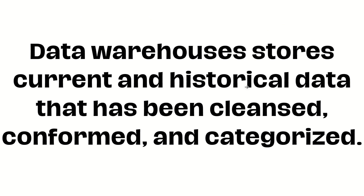A data warehouse stores both current and historical data — maybe from the last 10 to 15 years. The data available in the data warehouse has already been cleansed, conformed, and categorized. This is an important property: the data has already been cleaned, confirmed to a set of standards, and categorized. It also stores historical data that can help in making decisions based on data from the last 15 to 20 years.